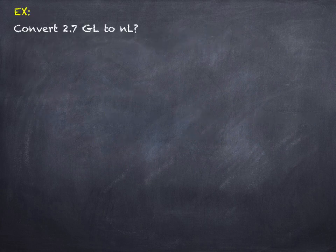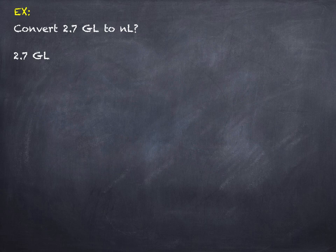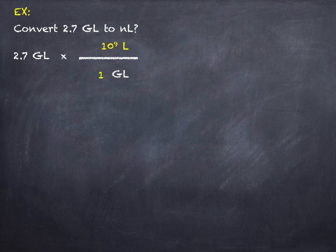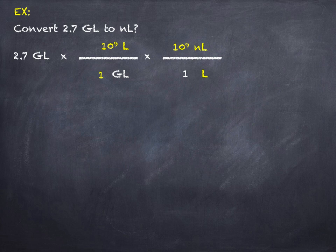Here's another example: converting 2.7 gigaliters to nanoliters. Giga is a large unit and nano is a very tiny unit. Start with 2.7 gigaliters — put gigaliters on the bottom to cancel it, and liters on top, since for every one gigaliter there are 10⁹ liters. Next, put liters on the bottom and nanoliters on top, since for every one liter there are 10⁹ nanoliters. Gigaliters cancel, liters cancel, and we end up with the answer in nanoliters.